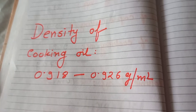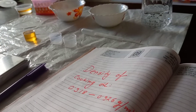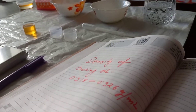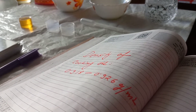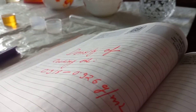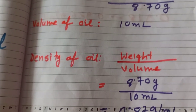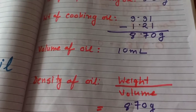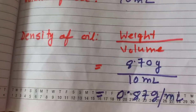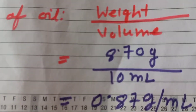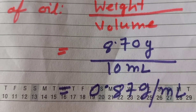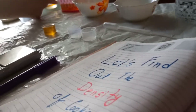If you remember, in the last video I showed you how to find out the density of water, and the density of water we found was around 1. Here we are getting the density of cooking oil as 0.87. So we can see that the density of cooking oil is less than the density of water.